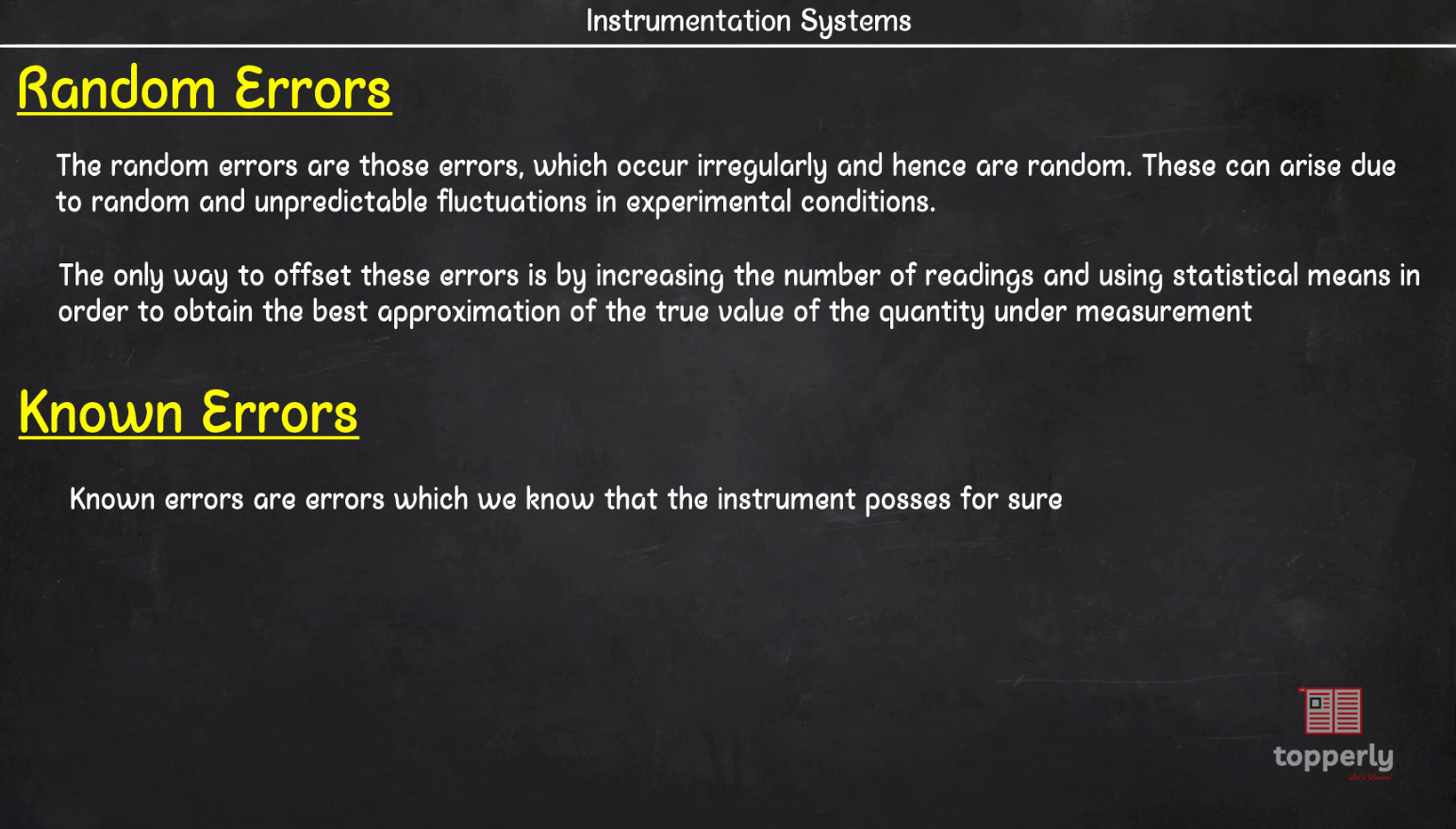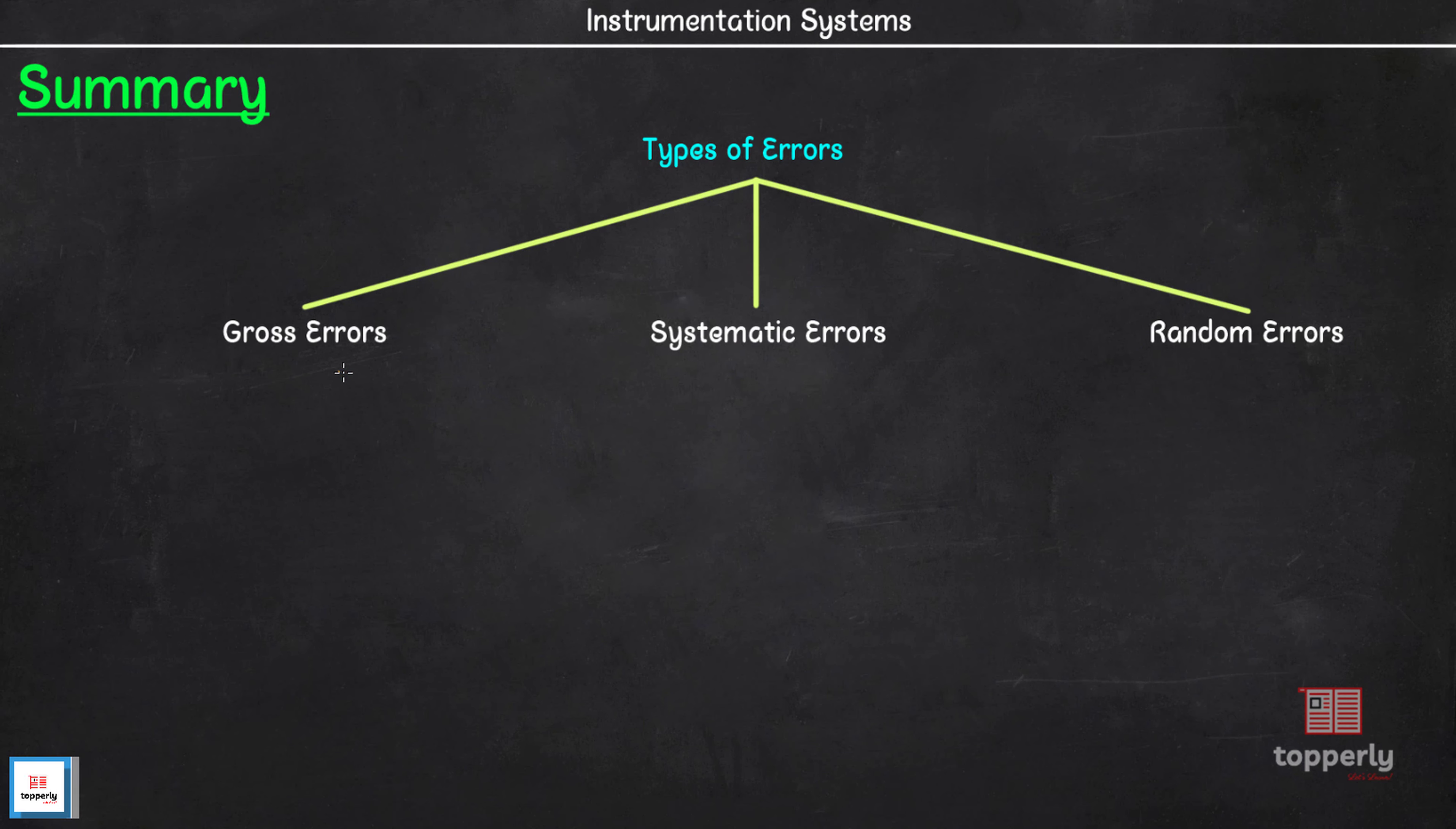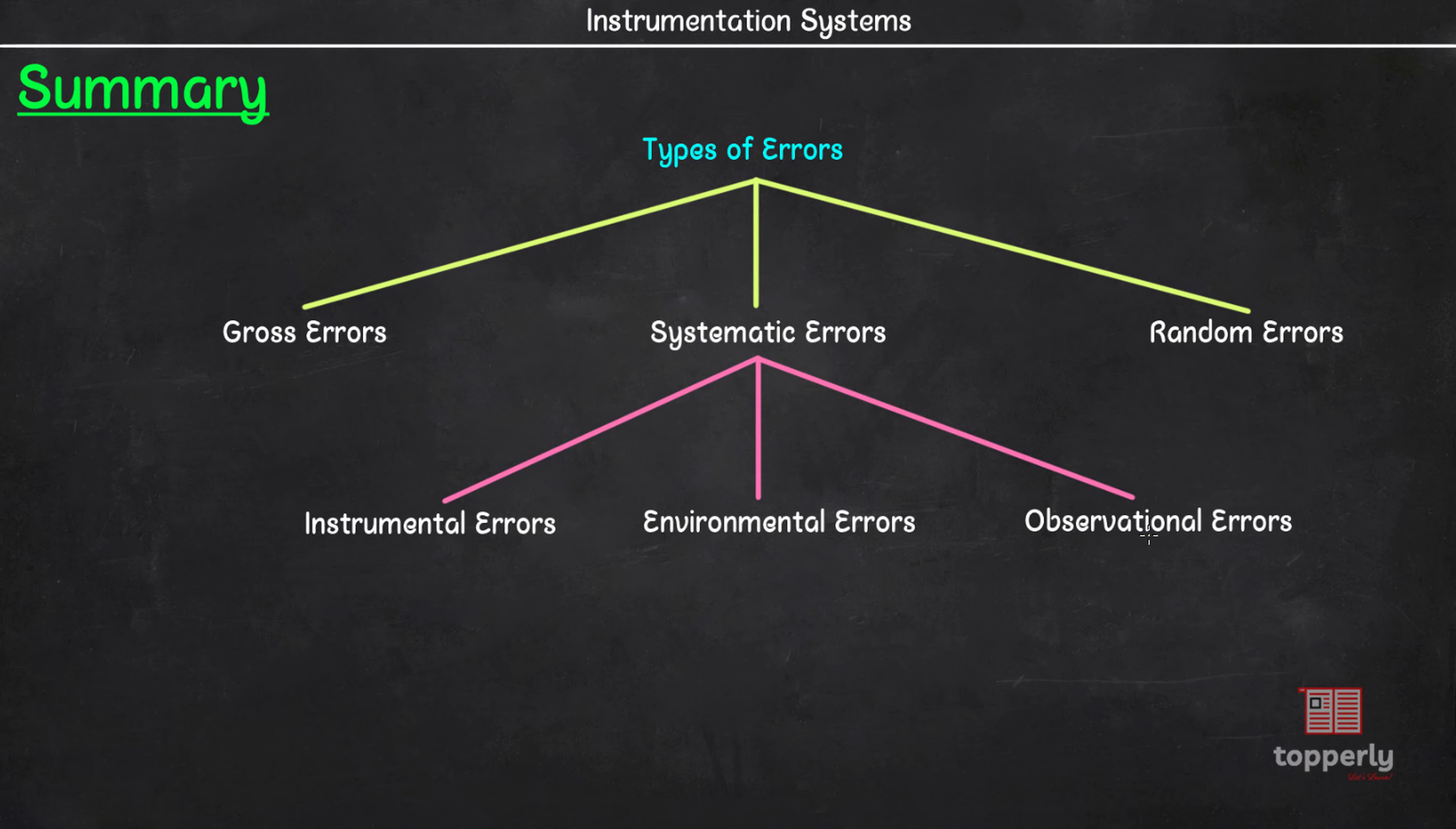That brings us to the end of this lecture. To summarize, we learned that errors are mainly classified into three: gross errors, systematic errors, and random errors. Of this, systematic errors are again classified into instrumental errors, environmental errors, and observational errors.